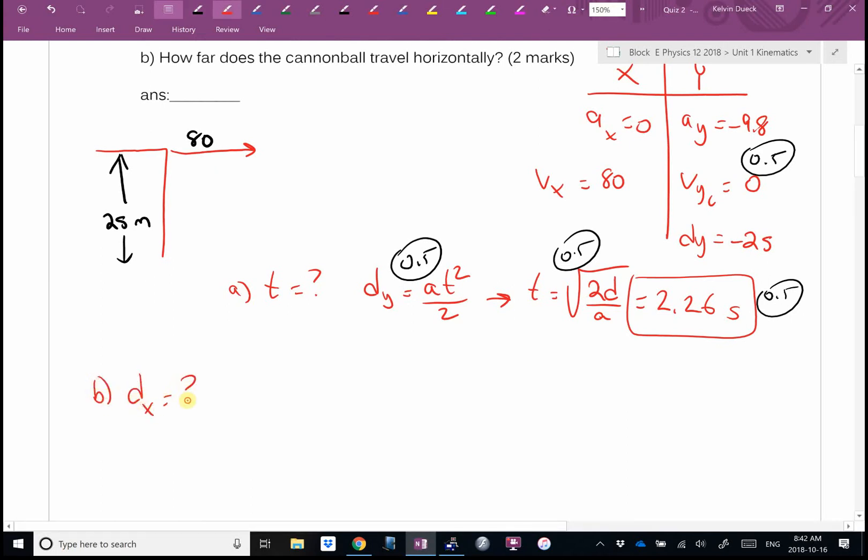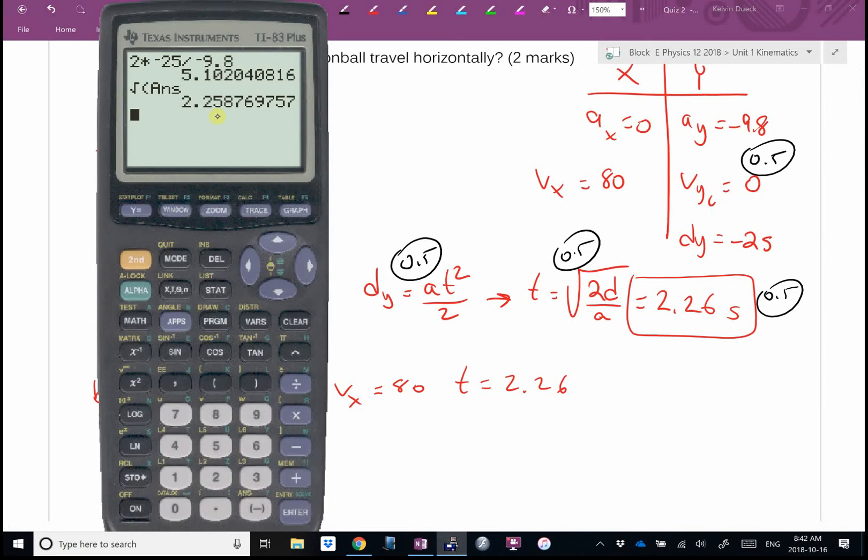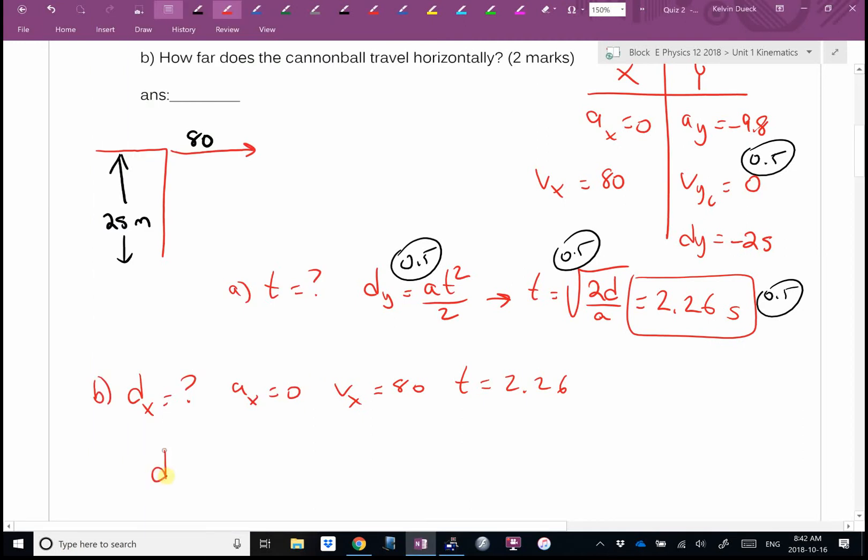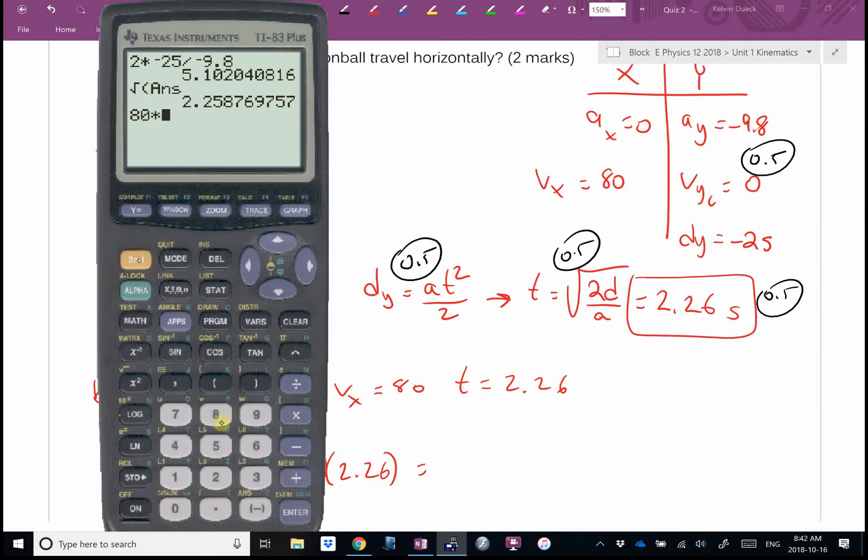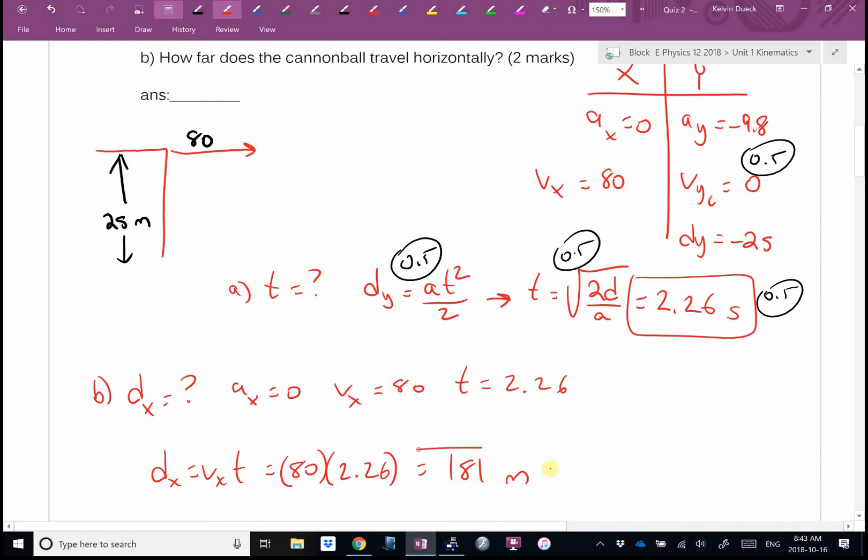Part b, they want me to find dx. I know ax equals zero, Vx equals 80, and time equals 2.26. I'm going to use my answer button, 2.258. dx = Vx·t. No half at squared since a is zero. Do you got 181? For two marks I would give you probably one mark if I saw that equation, half mark for numbers, half mark for answer.